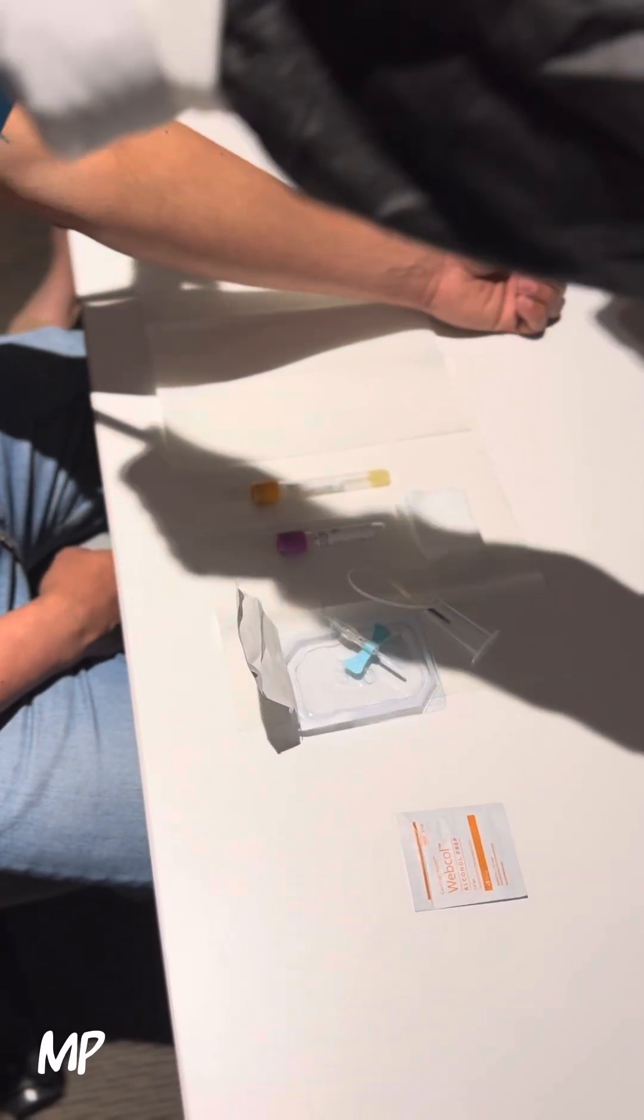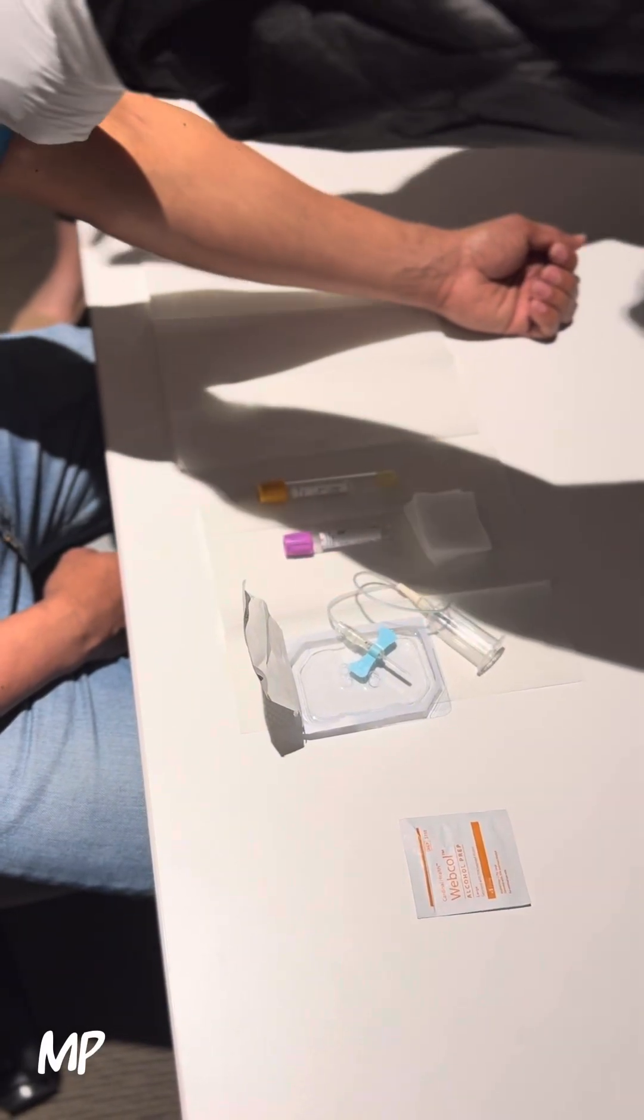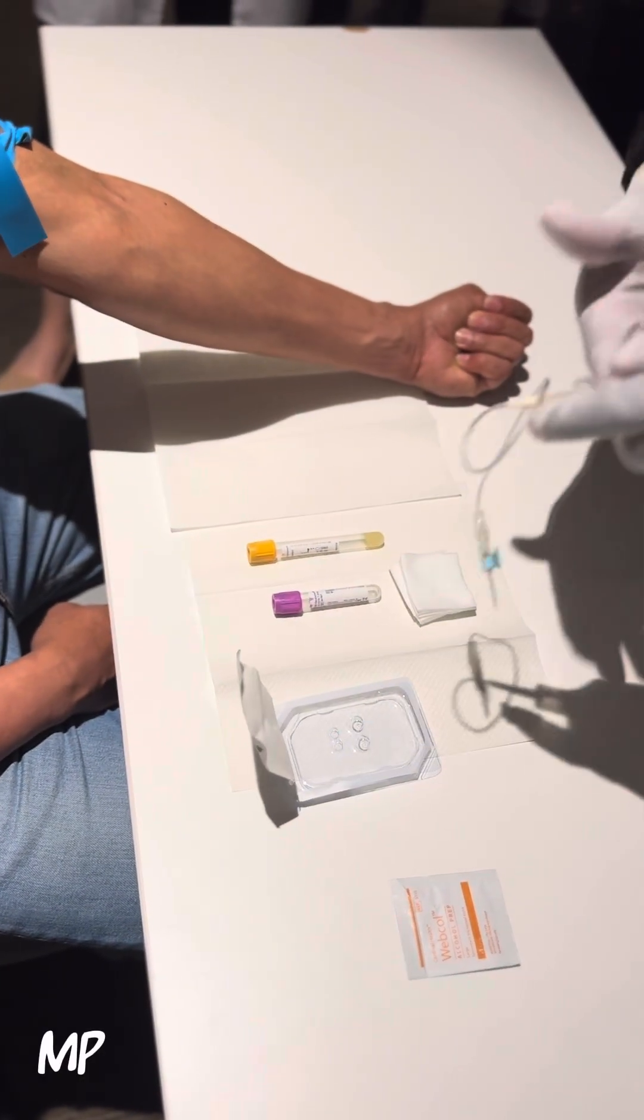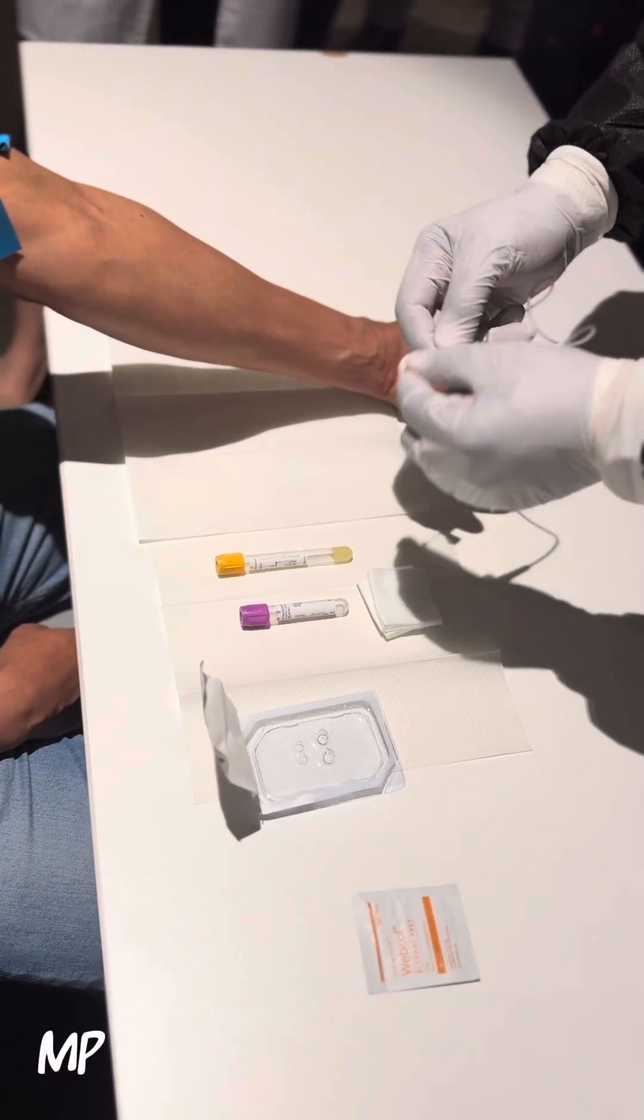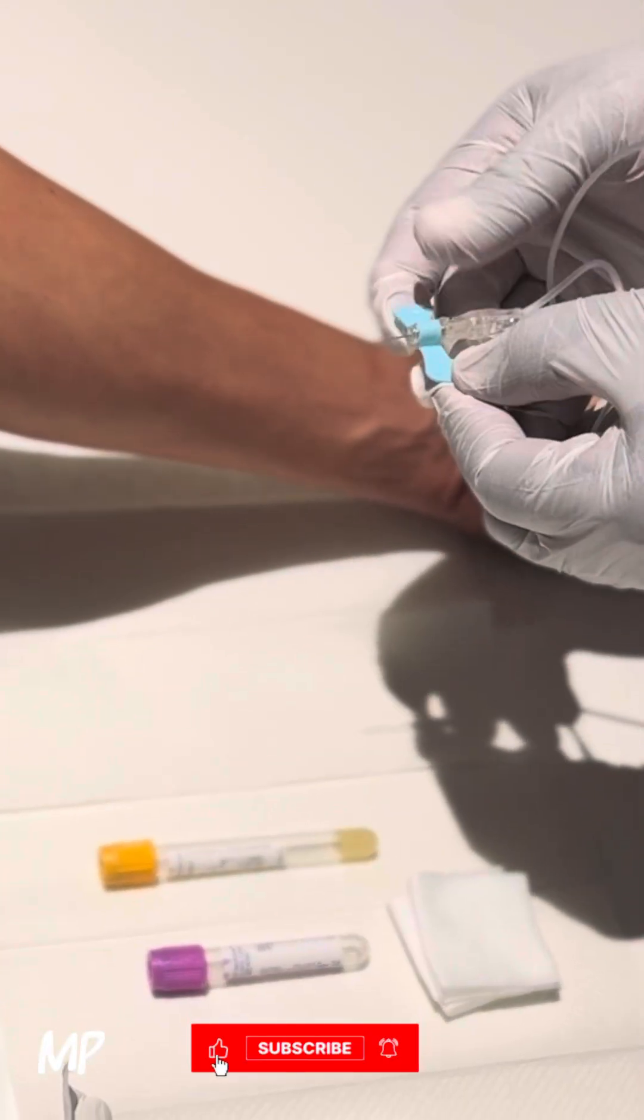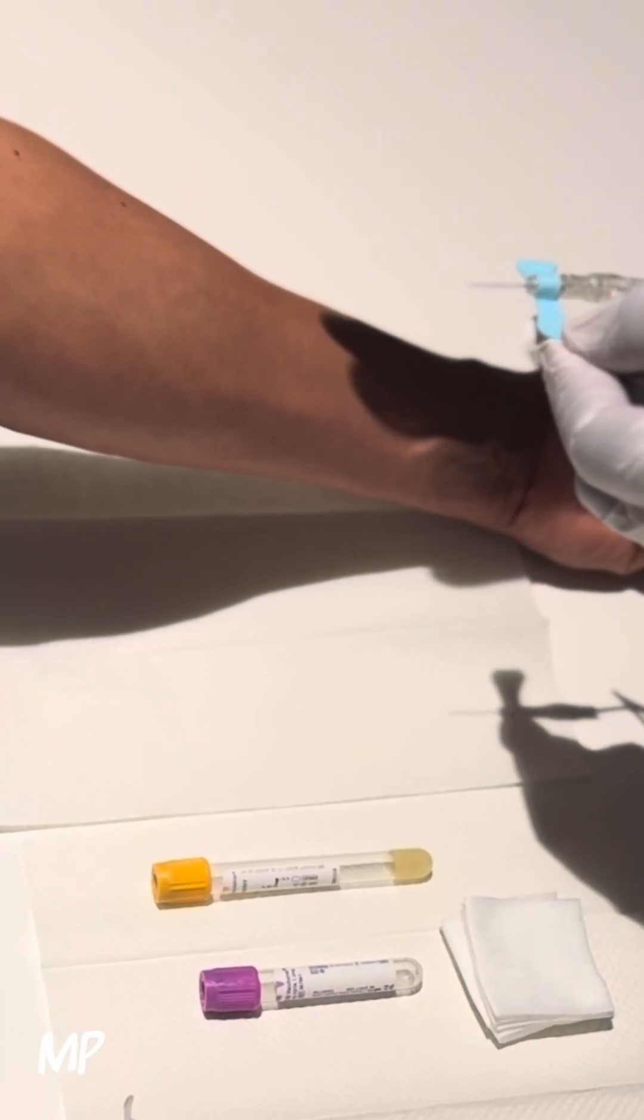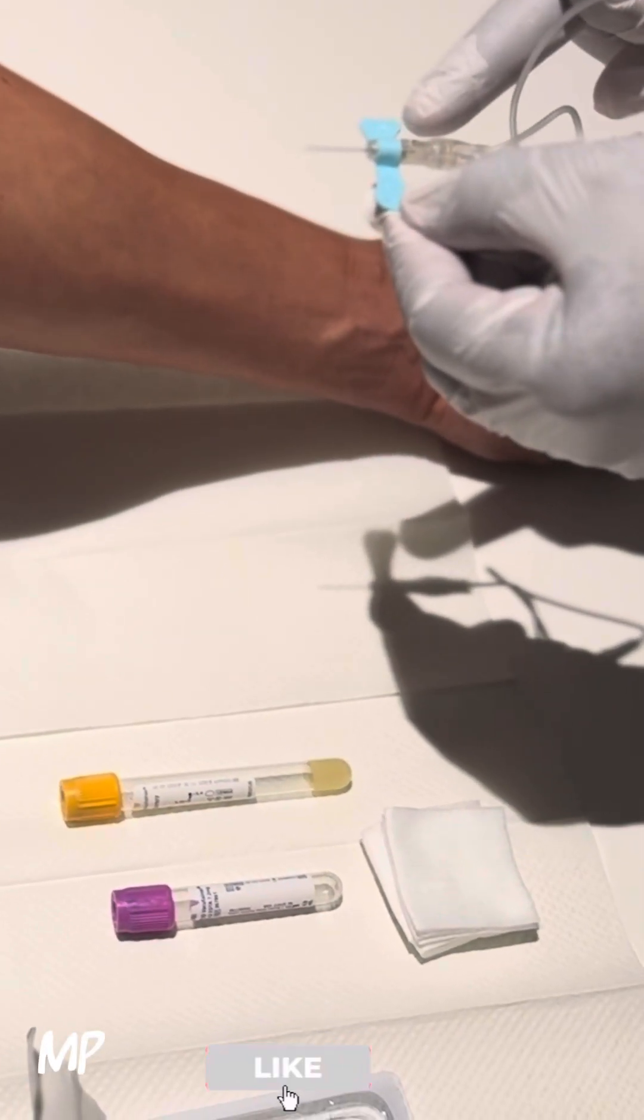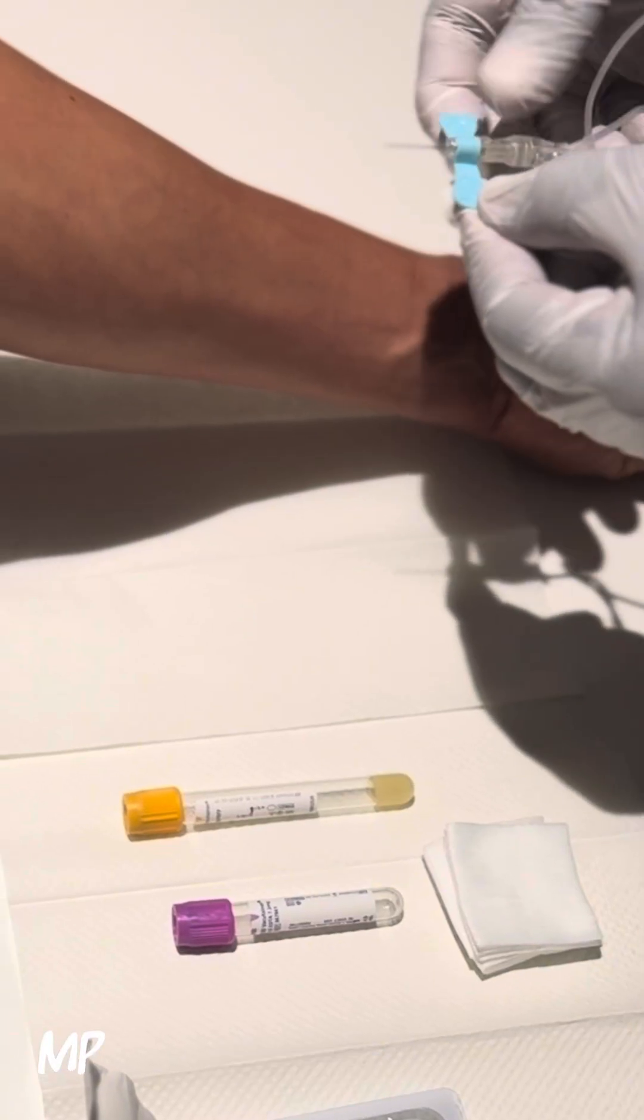Reapply the tourniquet. Ask the patient to make a fist. Pick up the butterfly needle and pinch the wings between your index finger and thumb. Please make sure the bevel of the needle is facing upwards towards you. Indicators will be the gauge size of the wing on the right hand side.